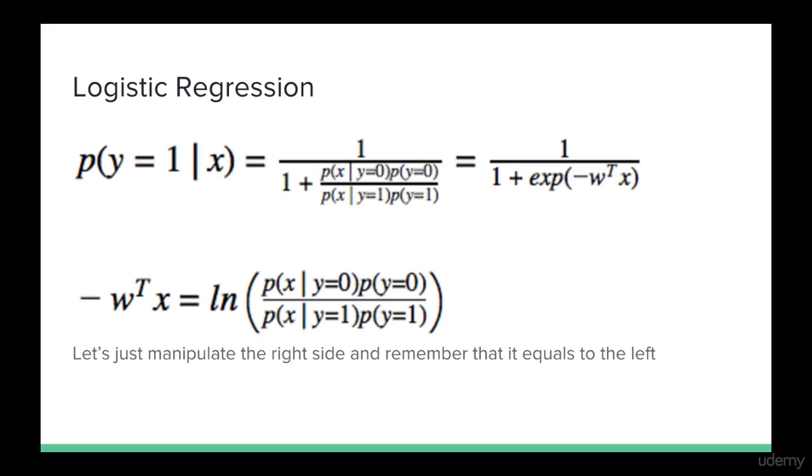We see that the negative of the weight times x is equal to the log of the ratio of probabilities from the previous slide.